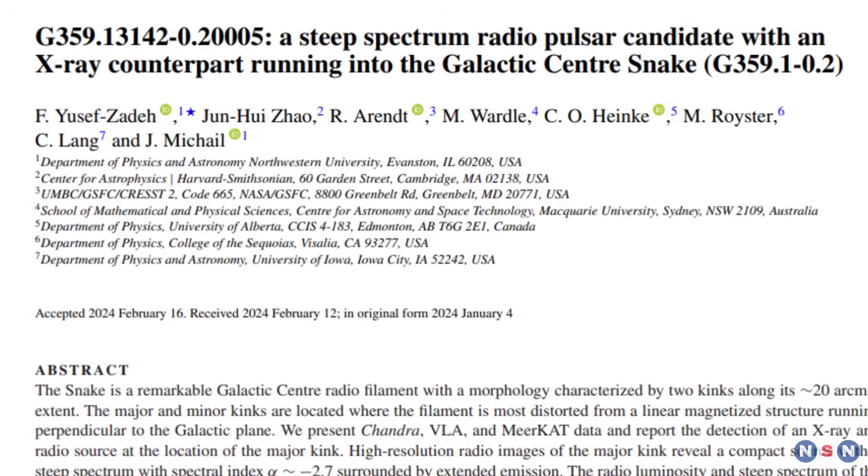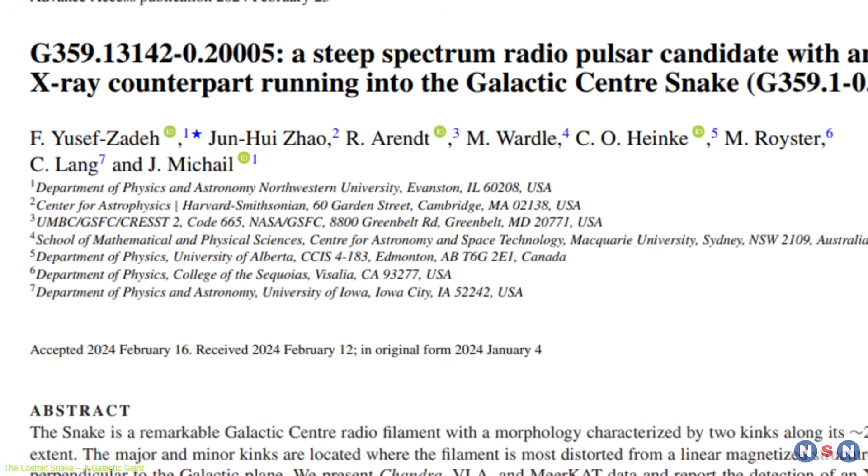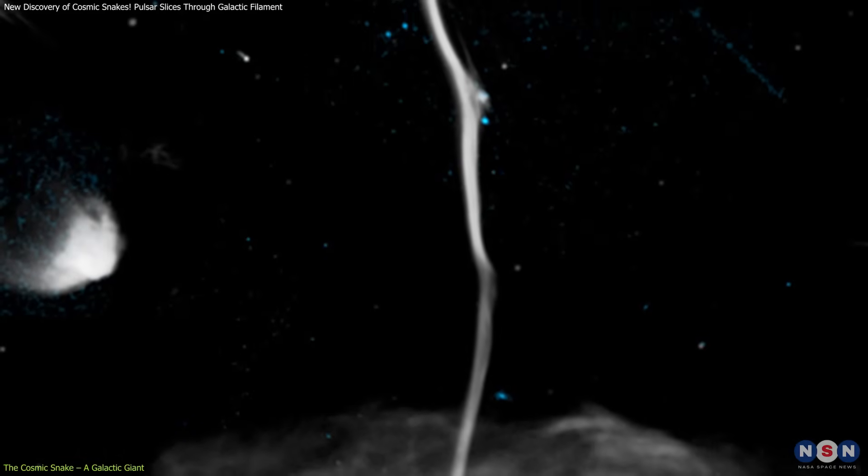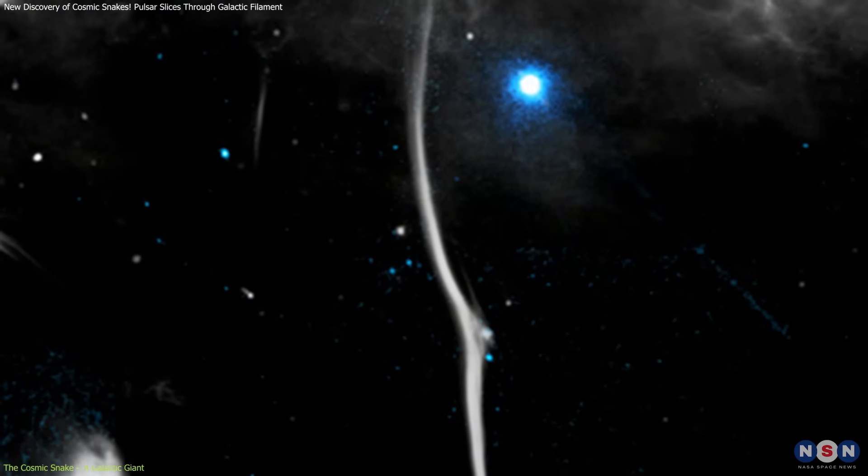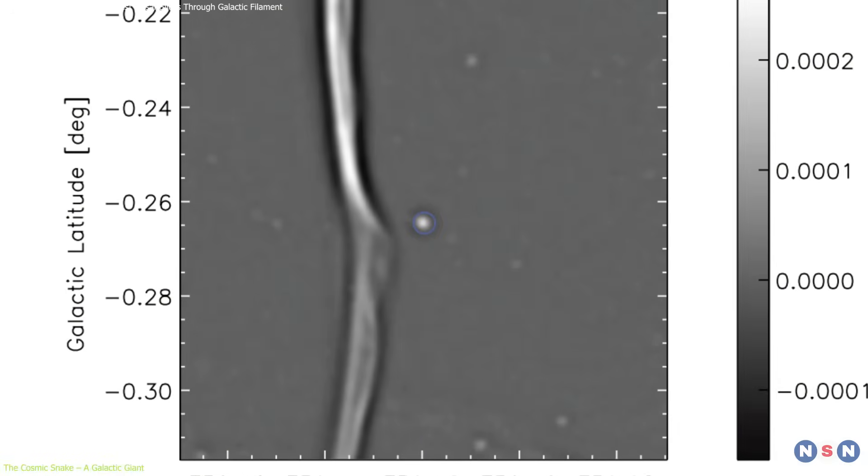The Cosmic Snake, officially labeled G359.13-0.20, is a vast filament of dense molecular gas near the Milky Way's center. Stretching about 230 light-years, it is one of the galaxy's longest and most luminous known filaments.